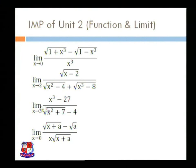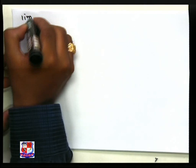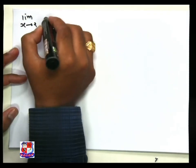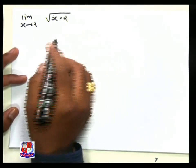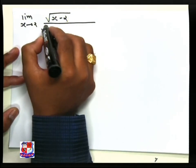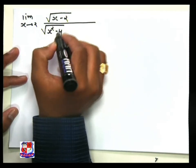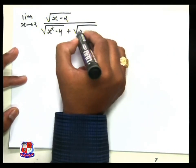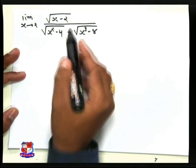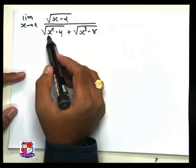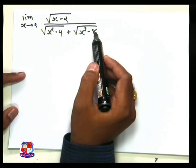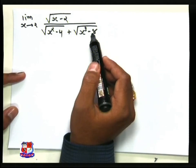Now we move to the next question: limit x tends to 2 of under root of (x minus 2) divided by under root of (x squared minus 4) plus under root of (x cubed minus 8). We note that x squared minus 4 factors into (x minus 2)(x plus 2), and x cubed minus 8 also contains a factor of (x minus 2).